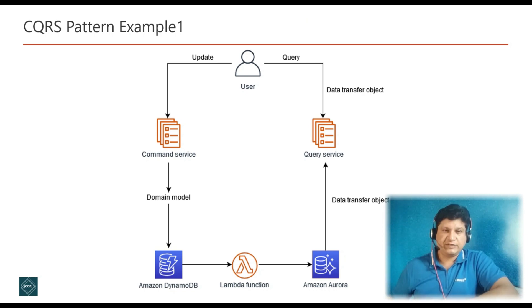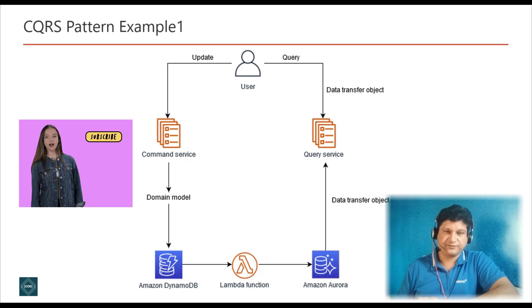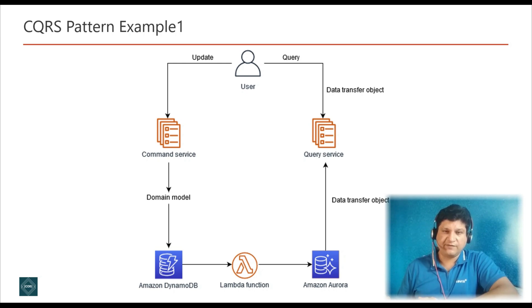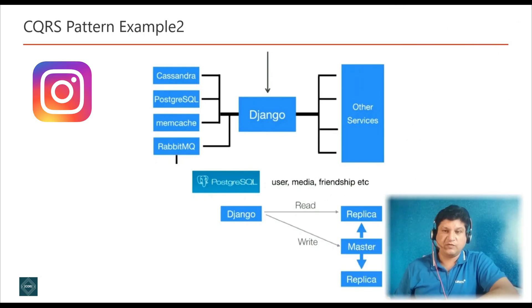Now let's understand CQRS with a real-world example. In the example shown on your screen, we are using NoSQL data storage to optimize write operation throughput and provide flexible querying capabilities via RDBMS. This achieves high write scalability on workloads with well-defined access patterns. For data syncing between storage systems, a DynamoDB stream sends data to a Lambda function that updates an Aurora table.